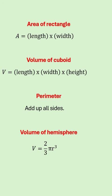The area of the rectangle is given as length by width, the volume of a cuboid is length by width by height. For perimeter you add up all of the sides, and for the volume of a hemisphere it's given as two-thirds multiplied by pi multiplied by radius cubed.